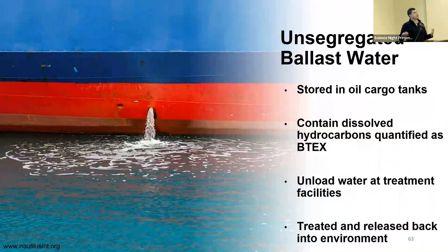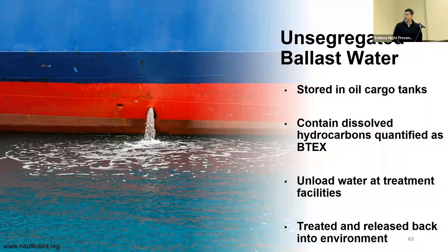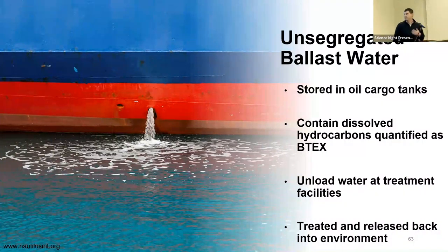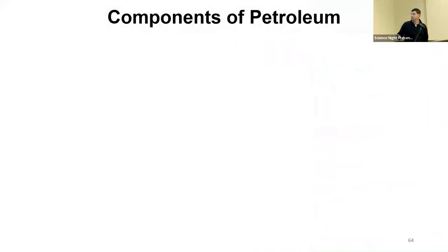So we're thinking about unsegregated ballast water. Ships need to collect water and put it in their ballast to make their ship stable in rough weather, and so what they do is they add water to the same holds where they hold their oil. Now you have oil and water getting mixed up — these dissolved hydrocarbons partition into the aqueous phase — and then they unload this ballast water at treatment facilities where it's treated and released back into the environment.